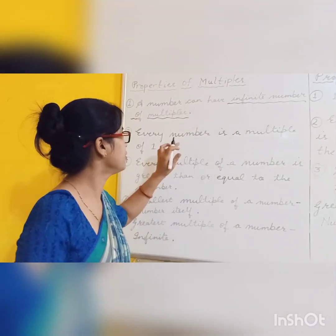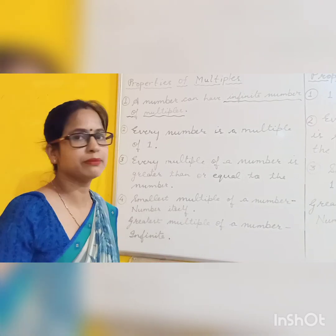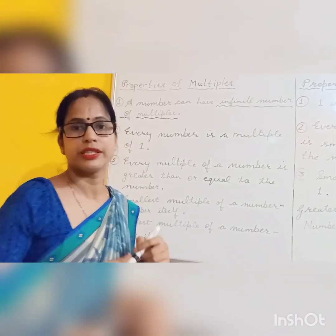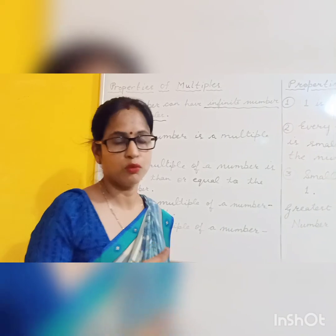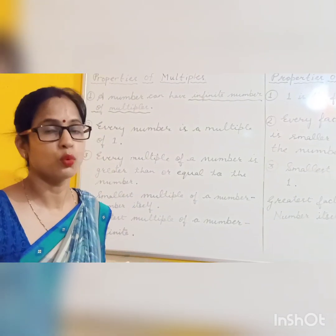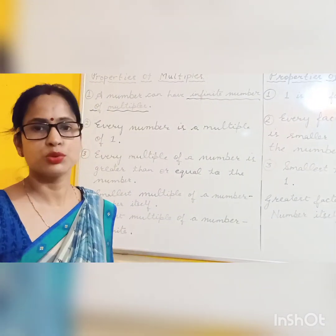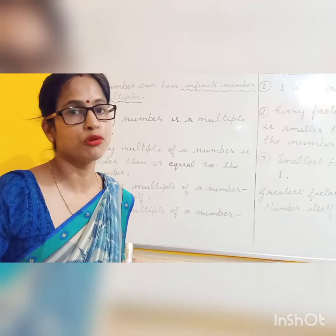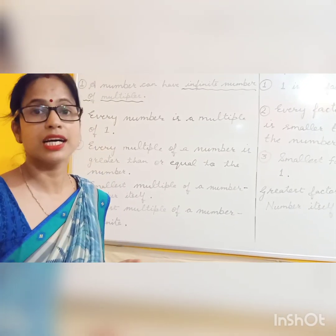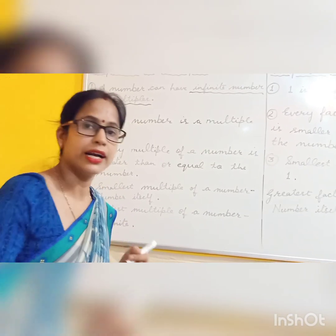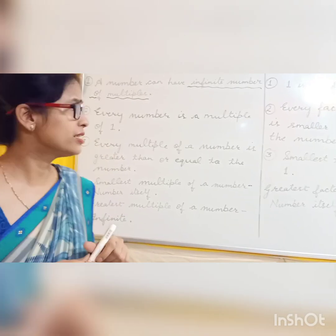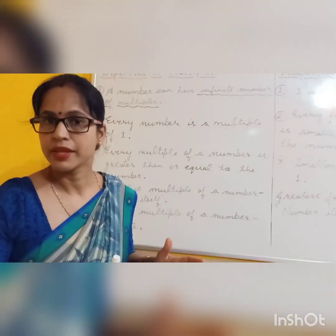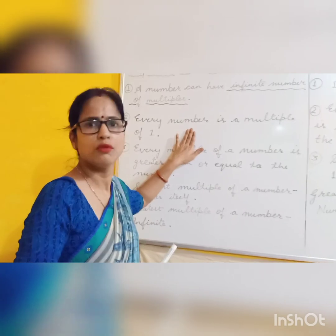Next property: every number is a multiple of 1. Reading the table of 1 — 1 one is 1, 1 two is 2, 1 three is 3, 1 four is 4, 1 ten is 10, 1 hundred is 100. We can see every number is a multiple of 1.